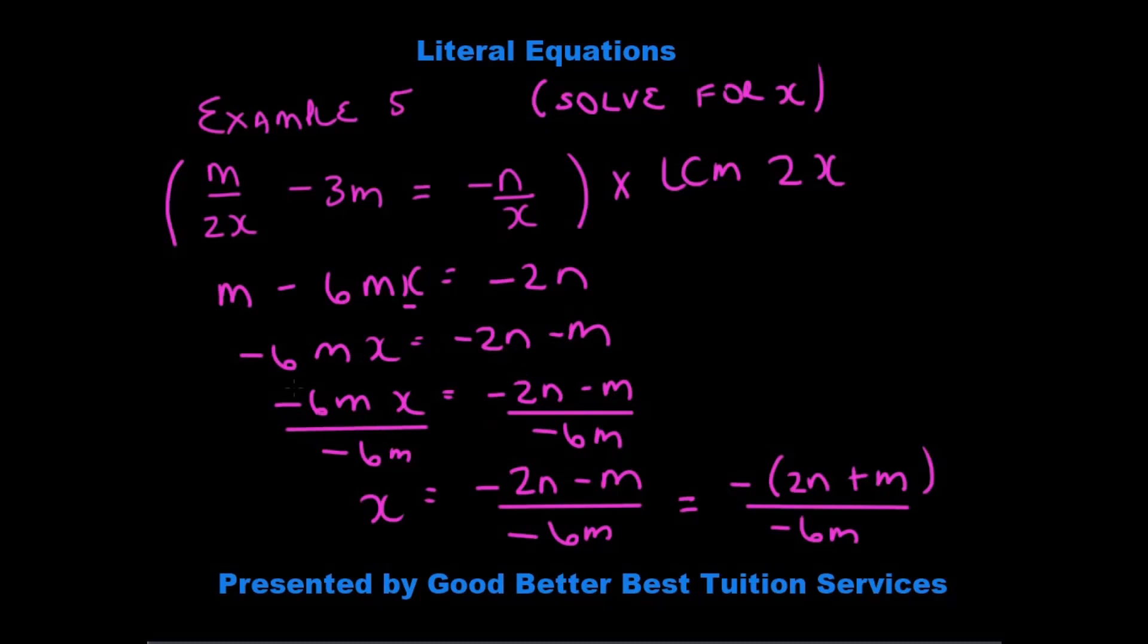And in this case, it's negative 6m. But what we do to the left, we must do to the right. So that gives us x is equal to minus 2n minus m over minus 6m. But it's not in its simplest form yet.